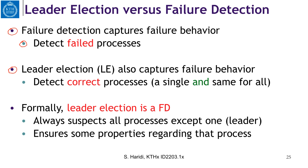Detecting correct processes means that it cannot suspect correct processes as failed. Formally, leader election is a failure detector. It always suspects all processes except one, which is the leader, and ensures certain properties regarding that process.